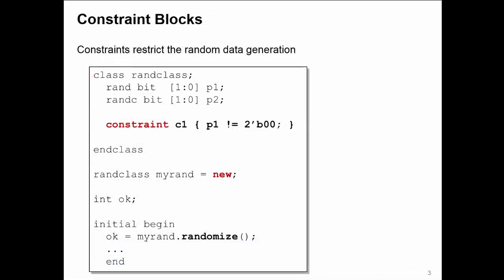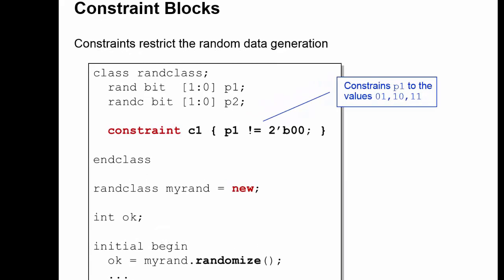A constraint allows you to restrict the values generated by randomization. In my class randclass, I have a constraint called C1 that says P1 is not allowed to be equal to zero. Let's have a closer look at the syntax for this.